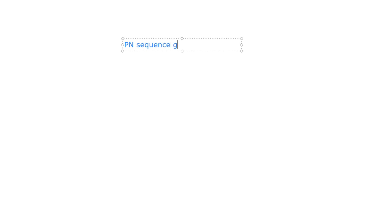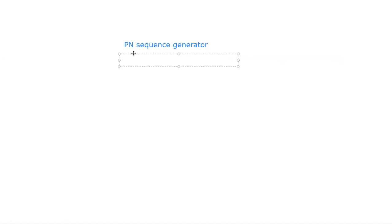Our topic of interest today is the PN sequence generator — we have to see the different PN sequence generators and their components. A PN sequence generator has different blocks. If you look at what those blocks are, a PN sequence generator is generally made of shift registers, and those shift registers are made of flip-flops.